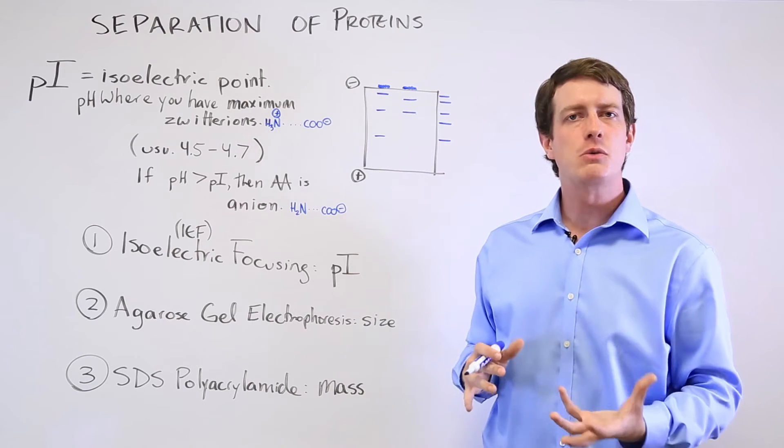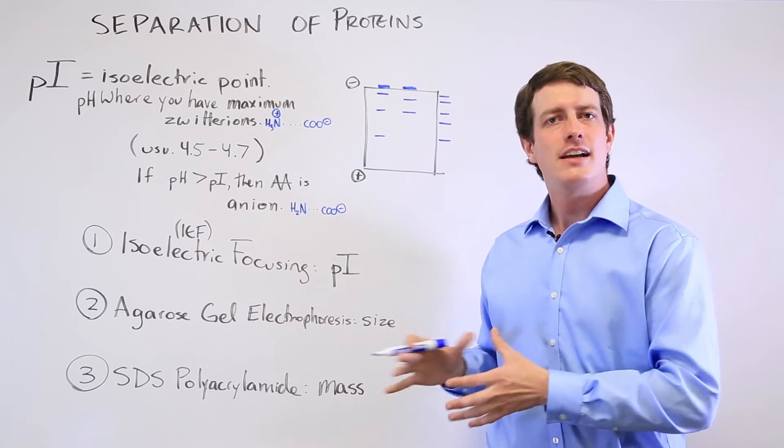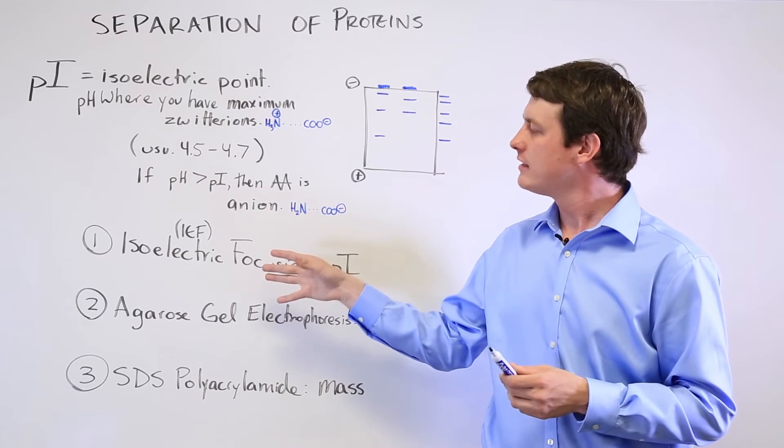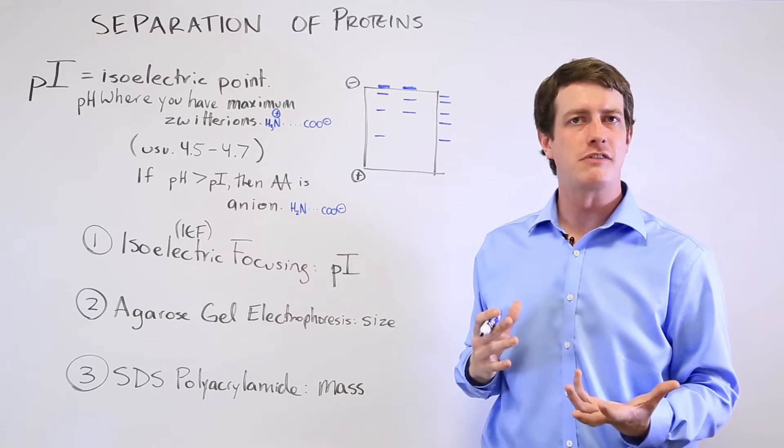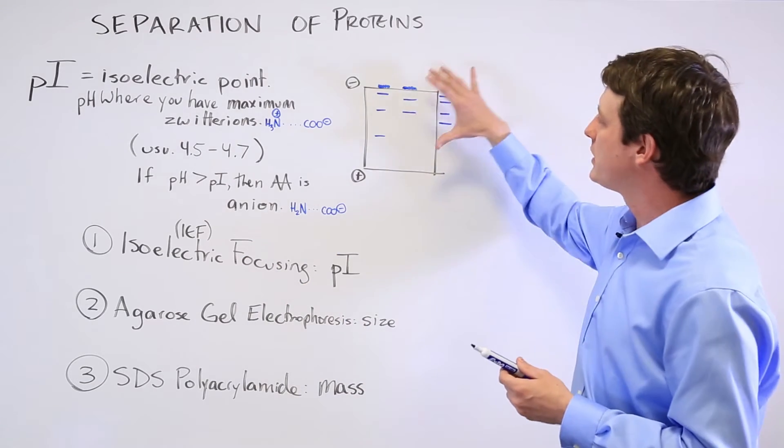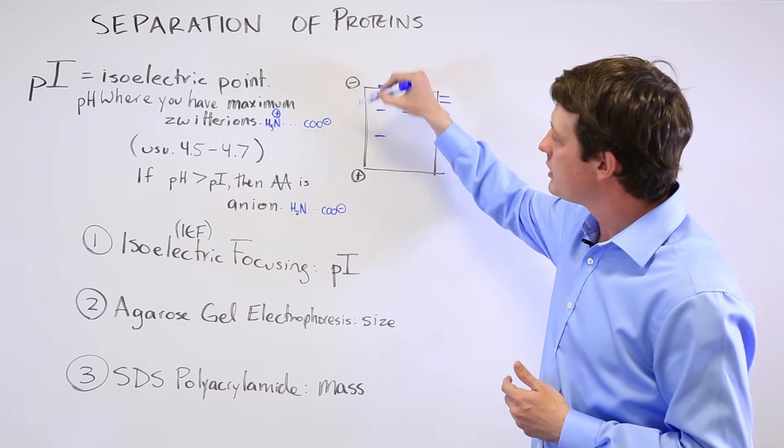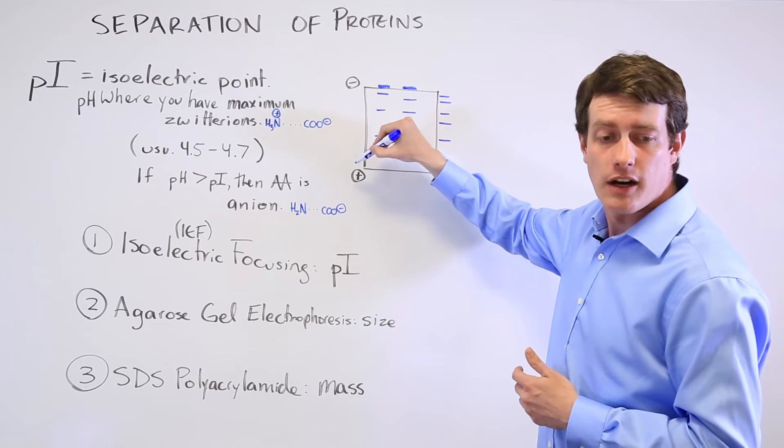This can be used to our advantage in order to analyze the different amino acids and figure out important things about them. The first method you can do is isoelectric focusing. That's where you set up a gel with a pH gradient. So it might have a low pH here and a higher pH on this side.